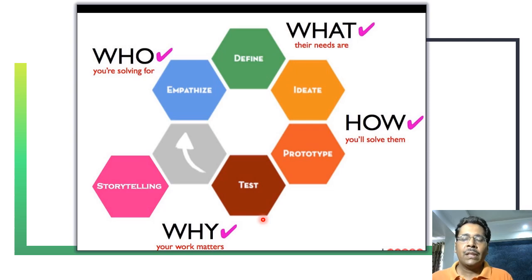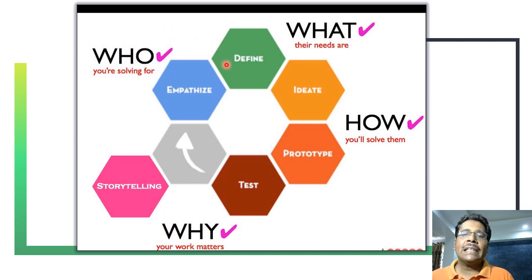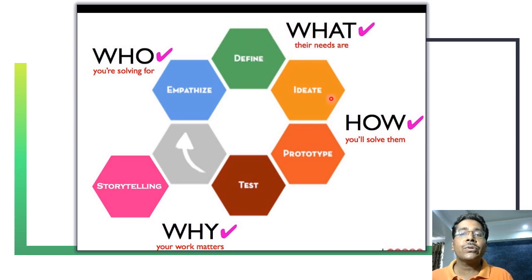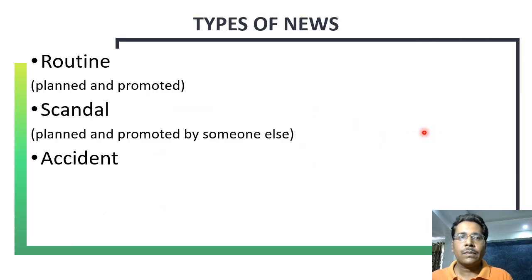This is another version of the Stanford design school schema. It starts with empathy — trying to find out who you're solving for, their needs, requirements, and how they live their lives. Then based on that understanding you define what their needs are and state the problem clearly. Then comes ideating — how are you going to solve them. Then you create a prototype and test it, finding out why your work matters. This version also adds storytelling as an additional process, and then the cycle repeats.